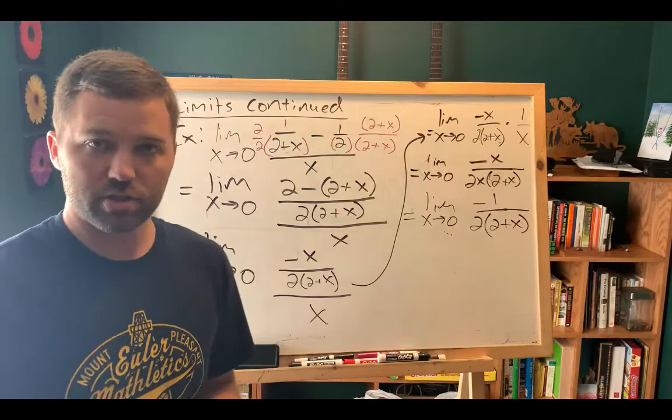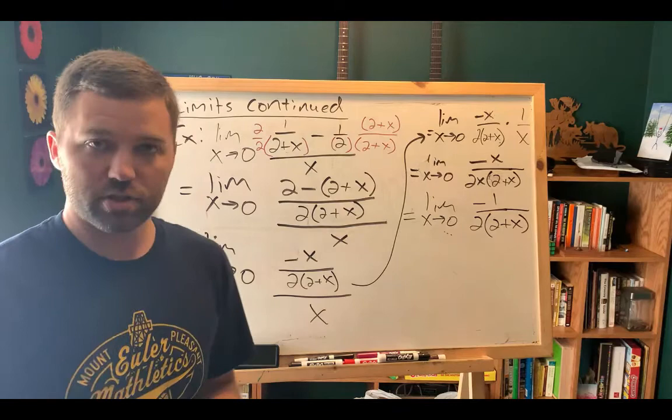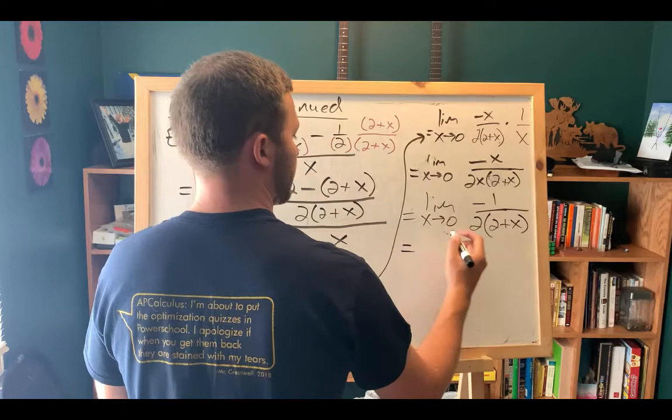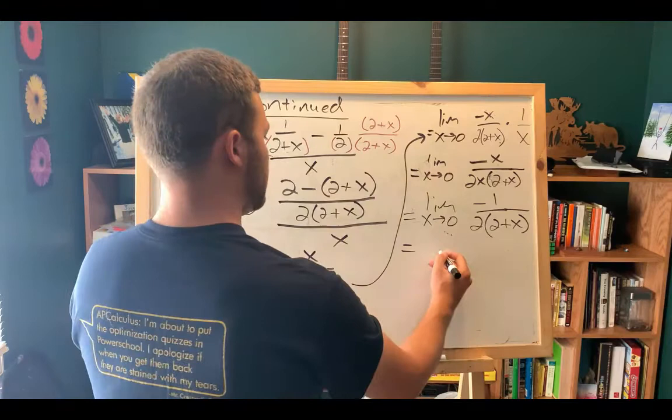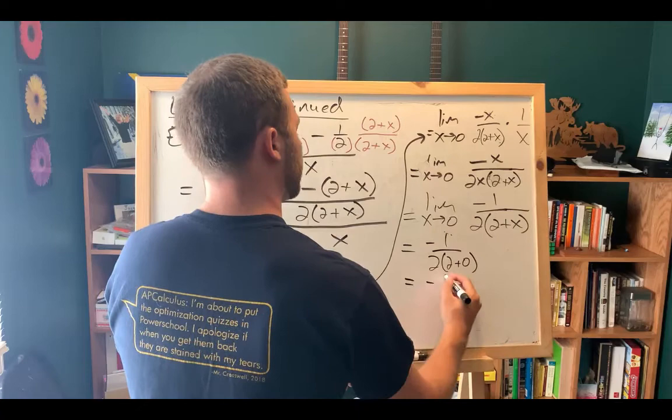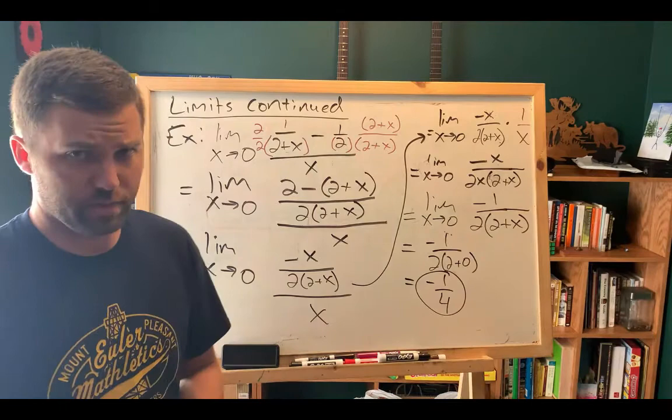So I end up with limit as x approaches zero of negative one divided by two times two plus x. And now I try direct substitution to see if that will work. And I plug in zero. I find that it will in fact work. So now I'm actually evaluating the limit. I'm going to drop the limit notation. And so I get negative one over two times two plus zero. That's negative one over four. So that limit is negative one-fourth.